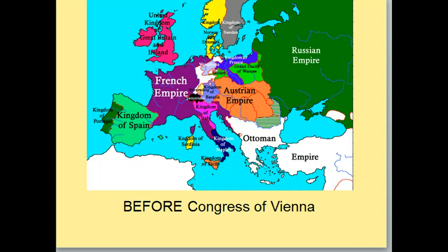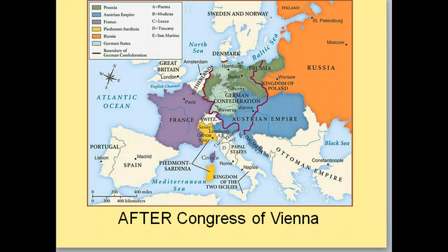The Austrian Empire — they ran out of colors — Portugal is not owned by Russia. The Austrian Empire is this orangey color in the middle, and then the Ottomans. And if I show you the after map, what's changed? Which countries have increased their size, which countries have decreased their size, and what's new? Take a second.